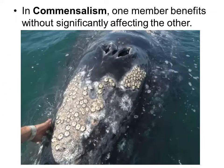The second type of symbiosis is commensalism. Commensalism is when one member benefits without significantly affecting the other. In this image we see barnacles living on the surface of a whale. The whale is not harmed — it may be uncomfortable, but one member, the barnacle, is benefiting while the other is not significantly harmed.